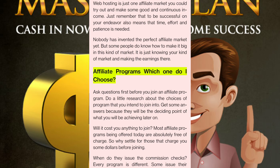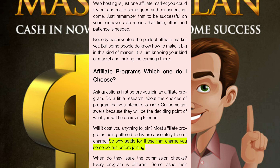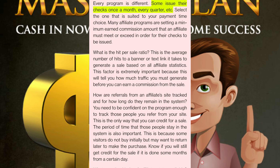Affiliate programs — which one do I choose? Ask questions first before you join an affiliate program. Will it cost you anything to join? Most affiliate programs offered today are absolutely free of charge. When did they issue commission checks? Every program is different — some issue checks once a month, every quarter, etc. Many affiliate programs set a minimum earned commission amount that an affiliate must meet or exceed. What is the hit-per-sale ratio? This is the average number of hits to a banner or text link it takes to generate a sale — it tells you how much traffic you must generate before you can earn a commission.